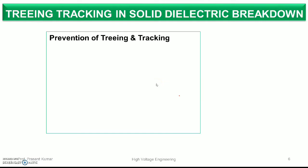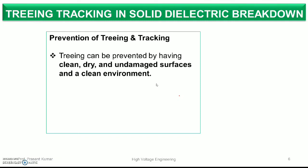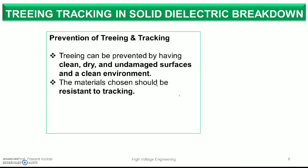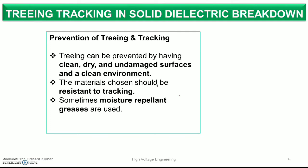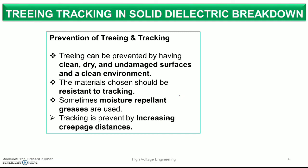Now, how can we protect against treeing and tracking in solid dielectric materials? Generally we do some practices: we keep the surface clean and dry, and minimize environmental impact on the surface. When choosing a material, we check its resistance and dielectric strength — it should be very high. We choose materials that are moisture-resistant, gas-resistant, grease-resistant, and oil-resistant. We can also increase the creepage distance between conductors and between two electrodes to minimize the impact of treeing and tracking.